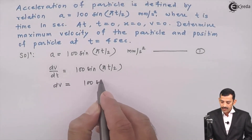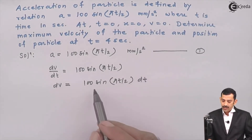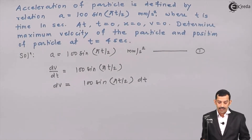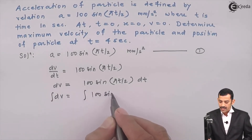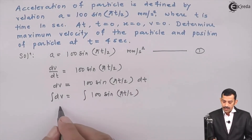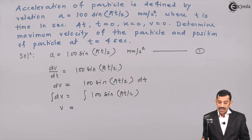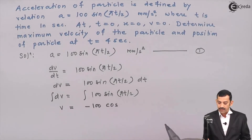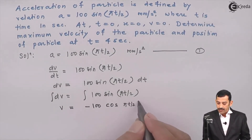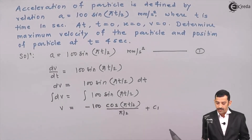Integrating both sides: the integral of dv equals the integral of 100 sin(πt/2) dt. The integral of dv is v. The integral of sin is minus cos, so we get v = minus 100 cos(πt/2) divided by the coefficient of t, which is π/2, plus a constant of integration C1. This simplifies to v = minus 200/π cos(πt/2) plus C1.